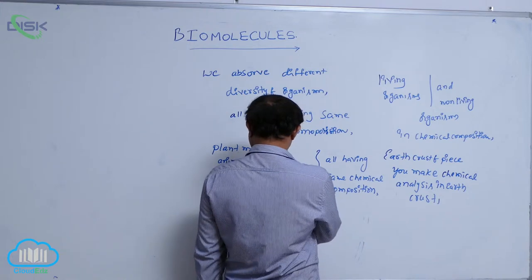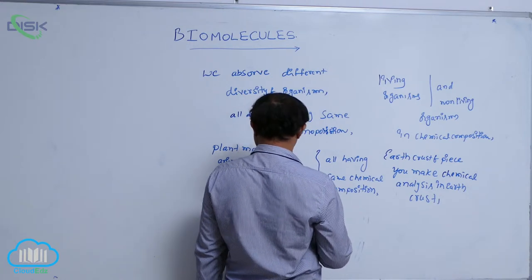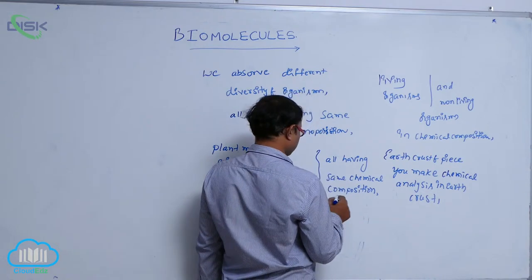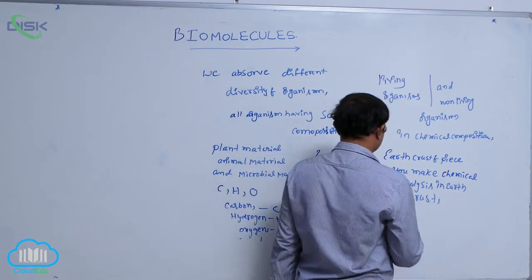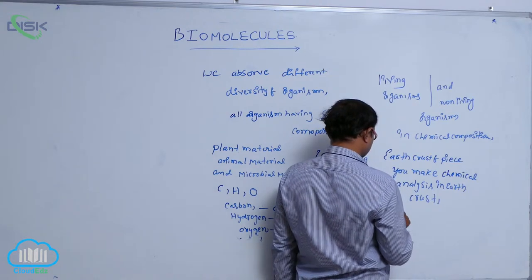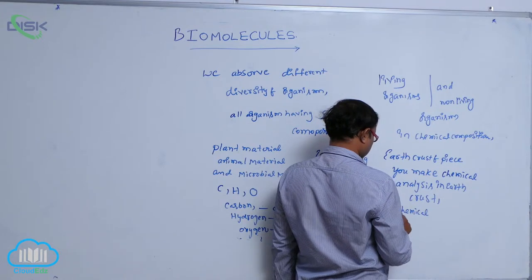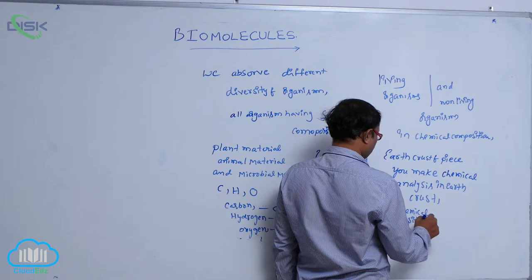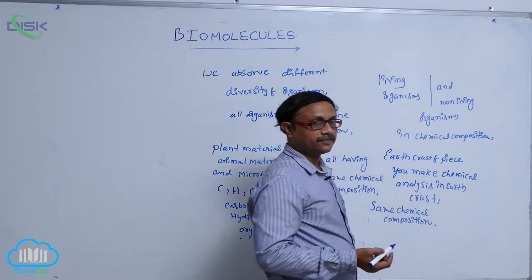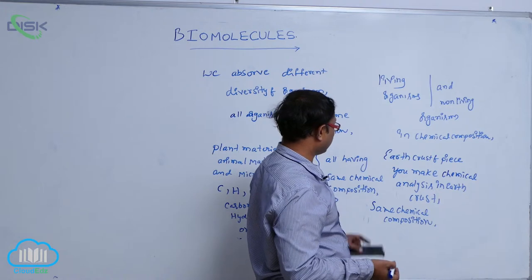In living organisms, the chemical composition includes carbon, hydrogen, and oxygen. The earth crust also has that same chemical composition — carbon, hydrogen, and oxygen. But what is the difference between living material and non-living material?